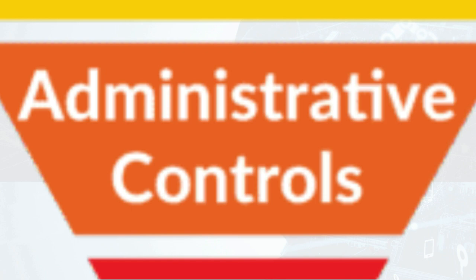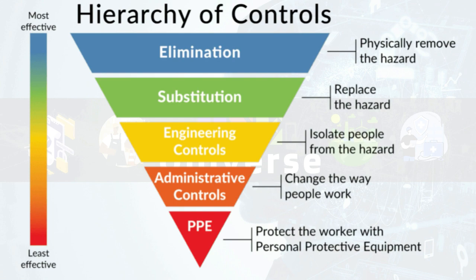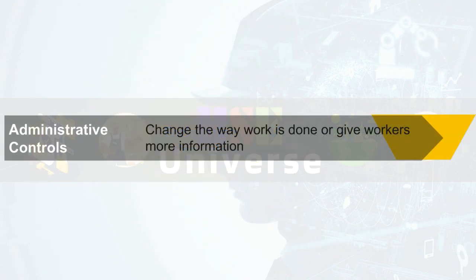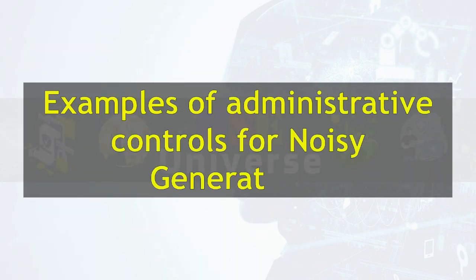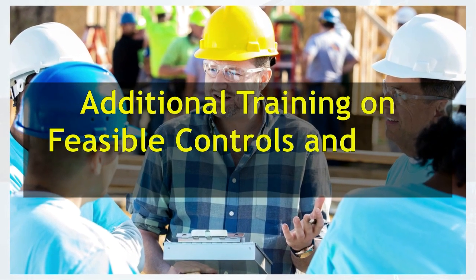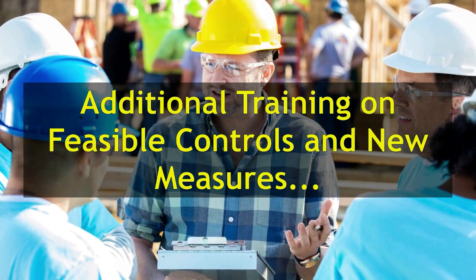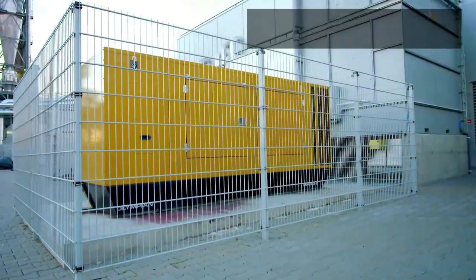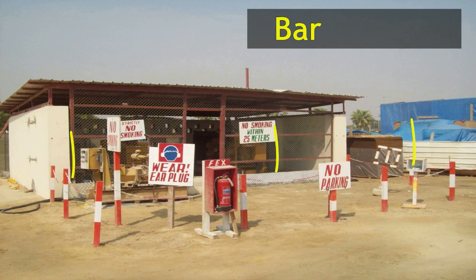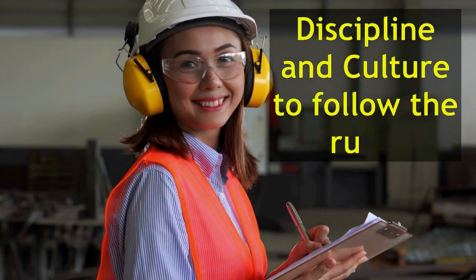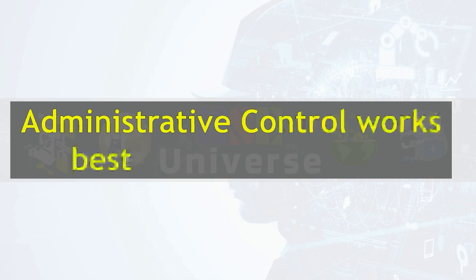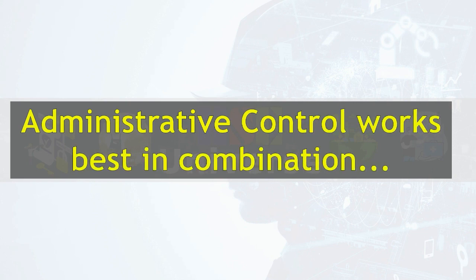Administrative Control. Administrative controls involve changing the way work is done or giving the work crew more information. In the noisy generator case, examples include: additional training about noise hazards and implemented control measures such as barricading around the noisy generator; warning signs for noisy generators and restrictions on entering the barricaded area or generator room; and having discipline and culture to follow established rules. Always remember that administrative controls work best in combination.